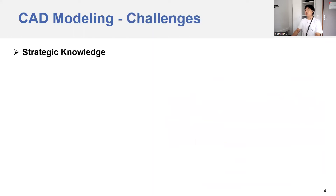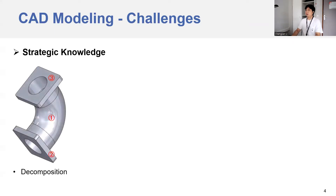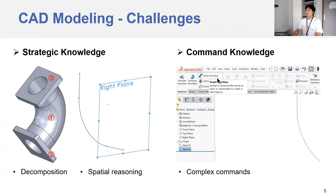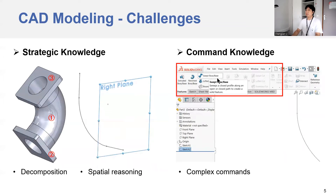However, there are two major challenges to use professional software, especially for novices. The first challenge is strategic knowledge — before the modeling process, users must mentally decompose the desired shape into smaller parts that can be created easily. Complex shape decomposition is much harder, and different decomposition schemes affect the modeling workflow. Also, during the modeling process, users must frequently rotate, translate, or scale the shape to do spatial reasoning, for example to place the orthogonal plane of the rolling curve. The second challenge is command knowledge, which requires users to remember all the complex menus and commands provided by specific software, calling for a certain amount of practice.